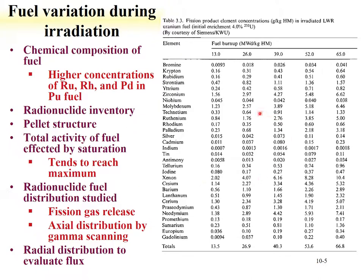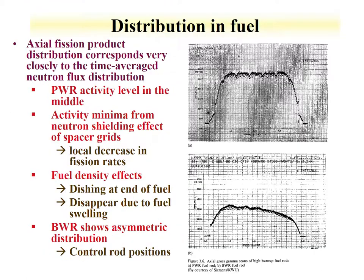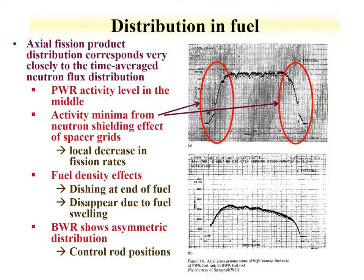Activity in the fuel as a function of radial distribution is shown for two fuel types: a pressurized water reactor and a boiling water reactor. With the PWR, there is a saturation — a constant level of activity in the middle of the fuel — and towards the edge, activity falls off. This behavior is due to neutron shielding effects from spacer grids, creating a local decrease in fission rates right around the edge. There are also some fuel density effects that can influence this behavior.